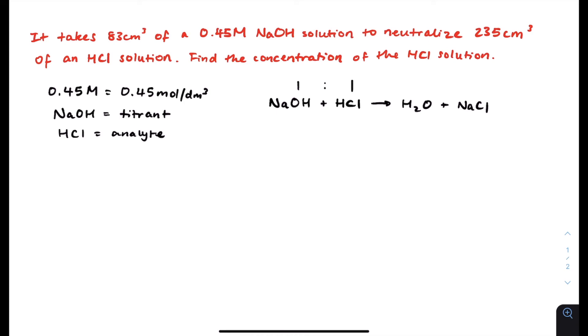So what we're going to do is now determine the moles of NaOH. Moles of NaOH, as we know, is calculated from N equals Cv. In this case, our moles is what we're trying to find out, and our concentration is 0.45 moles per dm cubed, and our volume is 83 divided by 1000.